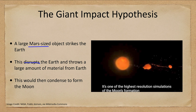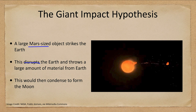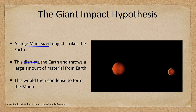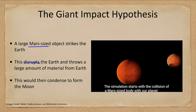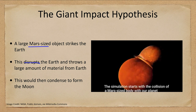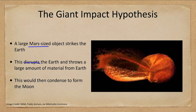One object comes back to Earth and the other will become the moon. This is one way of simulating how this might have occurred in a very large impact.